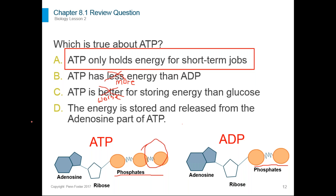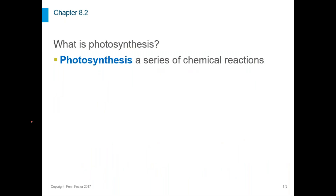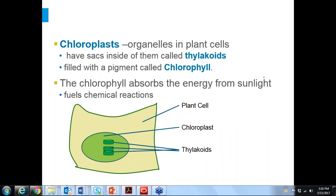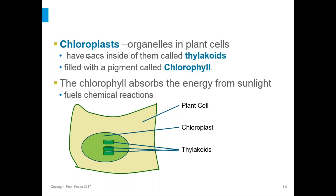We're moving into chapter 8 section 2, where we talk about what photosynthesis is. Photosynthesis is a series of chemical reactions — it's actually pretty complex, with lots of steps, lots of things going on, and lots of molecules involved. The main idea is that you're taking energy from sunlight, going through several molecules, and using it to make glucose molecules that store energy.